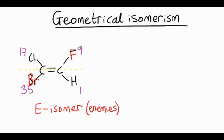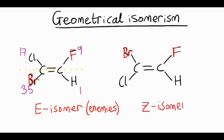Remember, E for enemies. So let's have a go at drawing the other isomer, which we call the Z isomer. This time, the bromine needs to go at the top and the chlorine at the bottom, and then on the other side, fluorine at the top, hydrogen on the bottom. And notice our priority groups, the bromine and fluorine, are now on the same side, so we call that the Z isomer. And you always use the atomic number to work out the priority group.